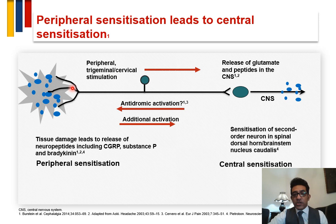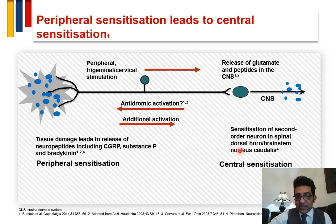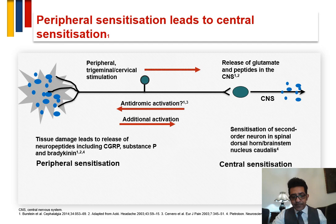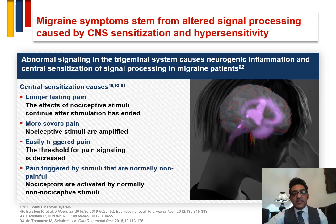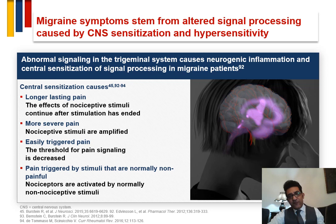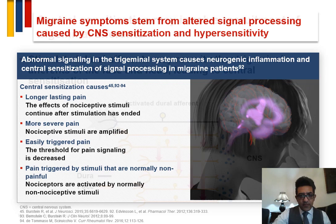Sensitization starts first in the peripheral nerve terminal and is then transmitted into the central nervous system, leading to central sensitization — meaning we become sensitized to pain signals more than ever before. This central sensitization is responsible for longer-lasting pain, more severe pain, easily triggered pain, and pain triggered by stimuli that are normally non-painful, which is allodynia — the perception of non-painful stimuli as painful.